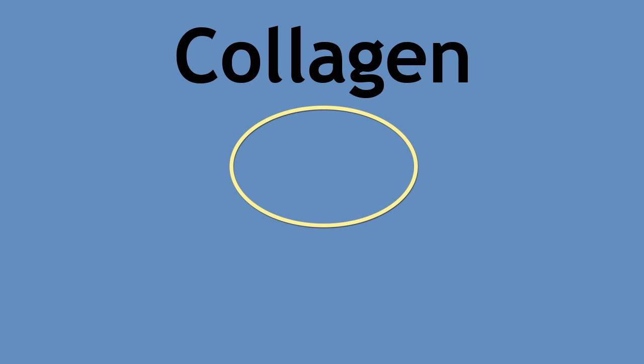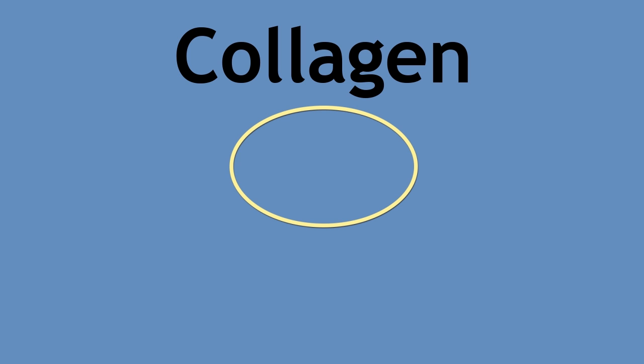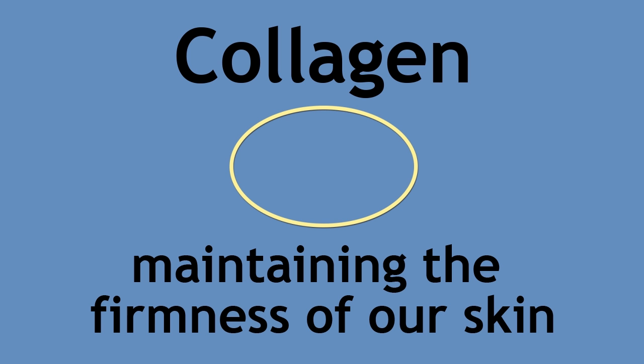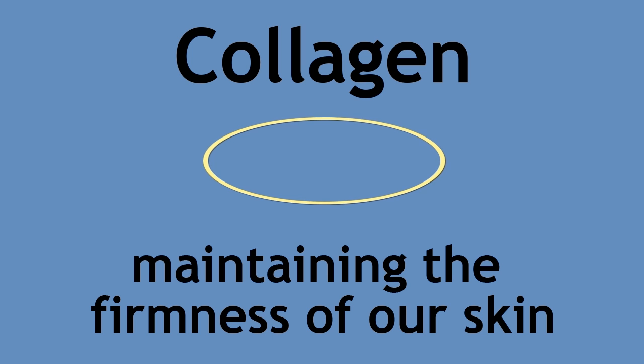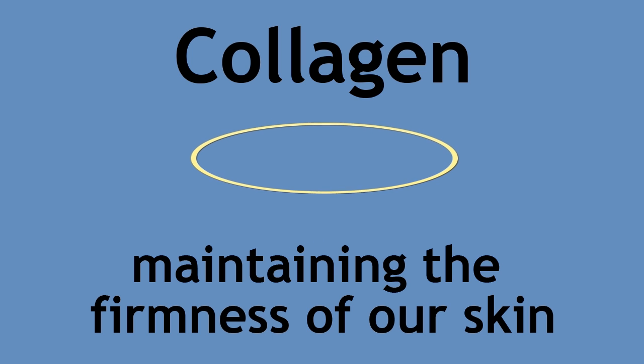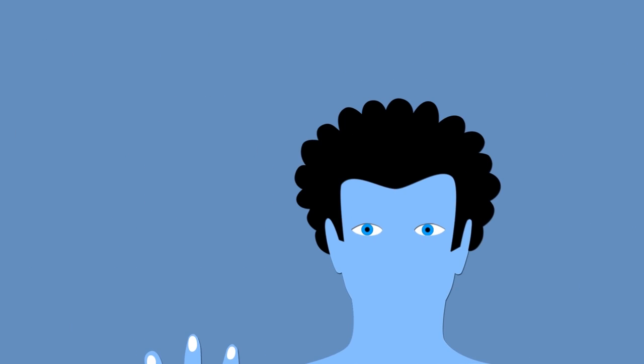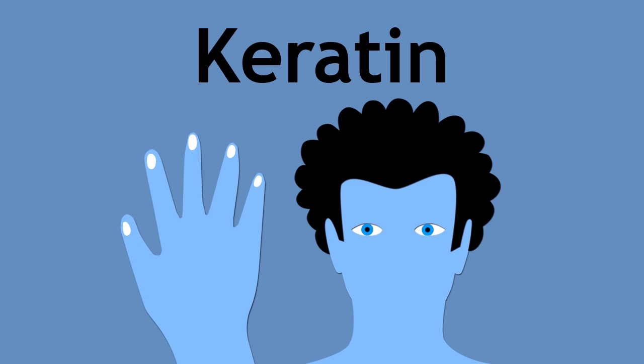Collagen is a fibrous protein responsible for maintaining the firmness of our skin. As time progresses, the collagen loses its elasticity, just like an overused elastic band. When this happens, grooves in our skin form — otherwise known as wrinkles. Hair and nails are made of keratin, yet another type of protein. Keratin is not exclusive to humans, but is also found in bird feathers, turtle shells, and cat claws.